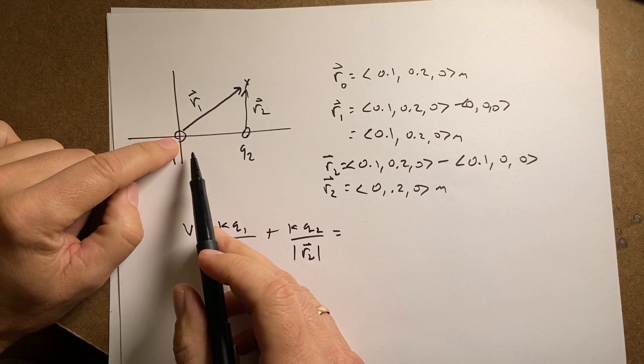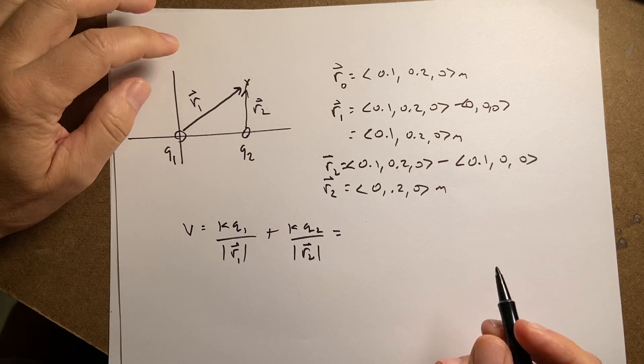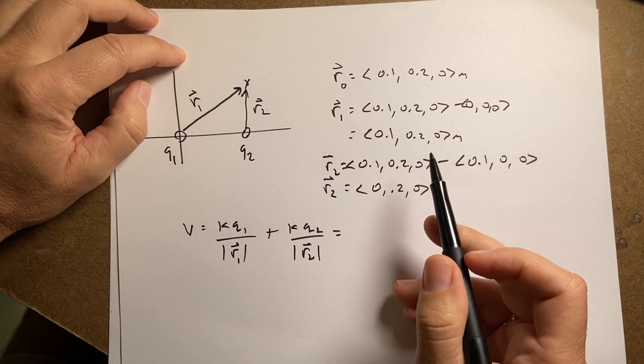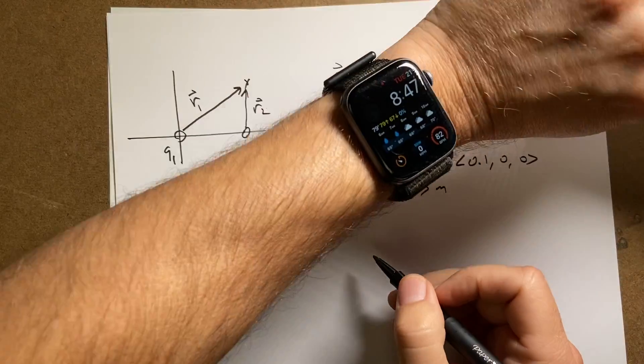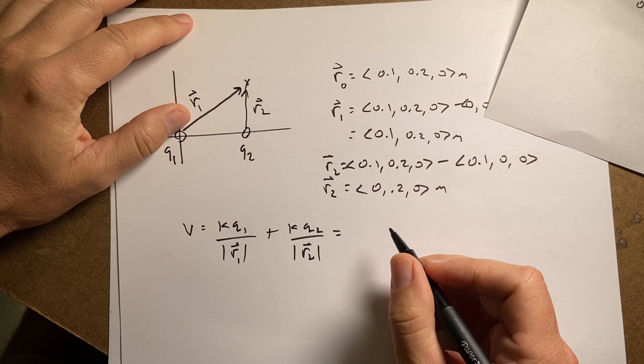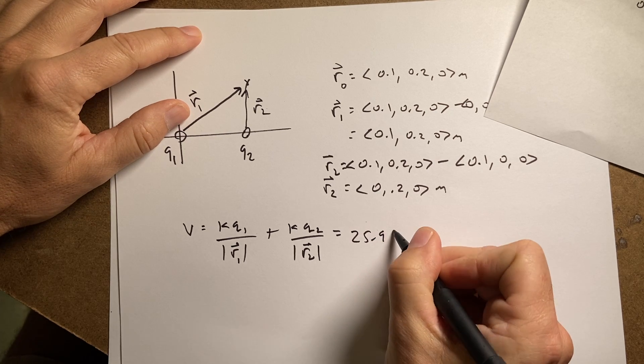And in fact, once I do this, I can put these anywhere I want. In the calculator I'm going to show you, you can put these vectors, the charges wherever you want and the observation location wherever you want. So if I do that, and I did in Python, I got this is 25.99 volts.